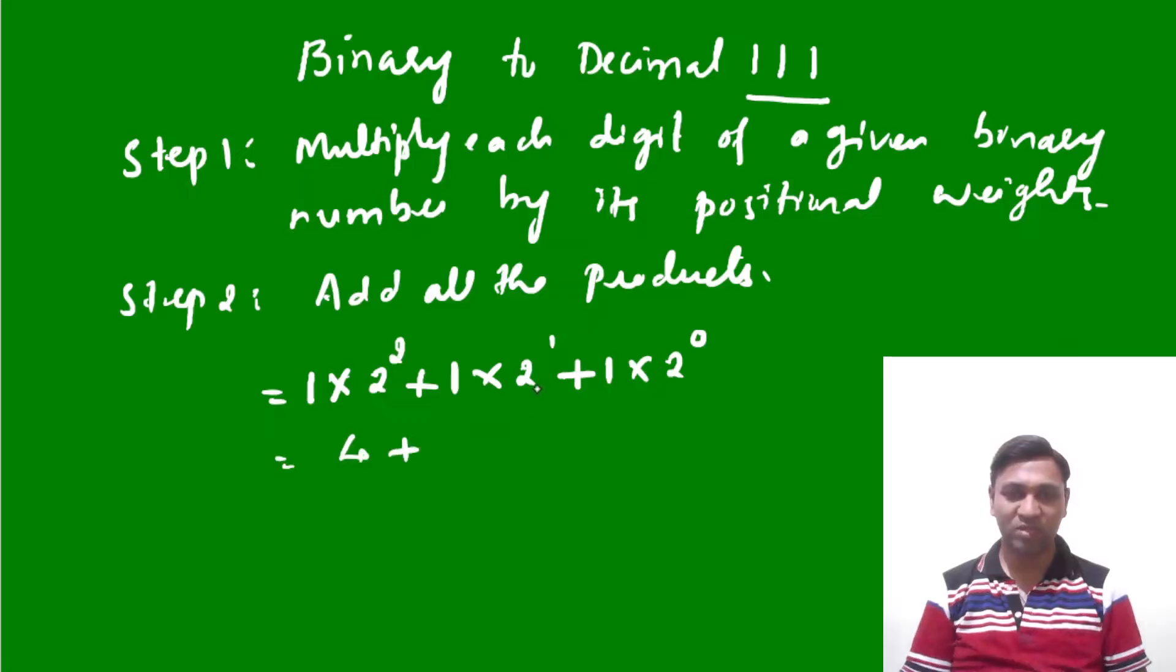2¹ is 2, so 2 × 1 = 2 plus. 2⁰ is 1. Anything raised to zero is one only, so 1 × 1 = 1. Here you can add 4 + 2 + 1.